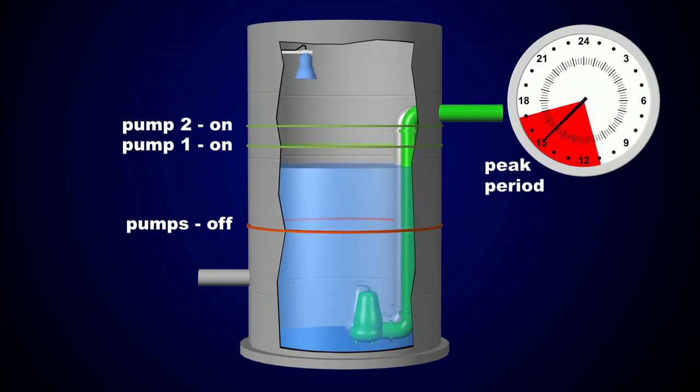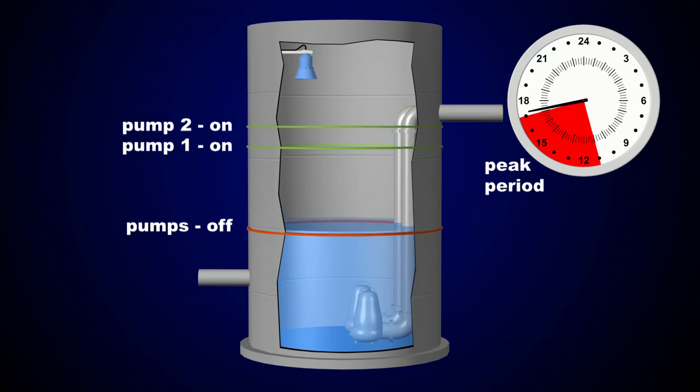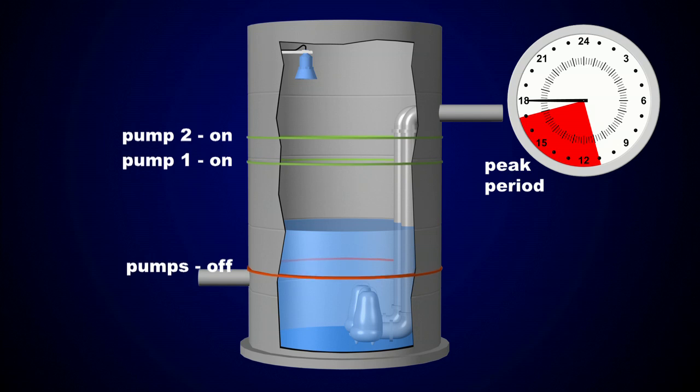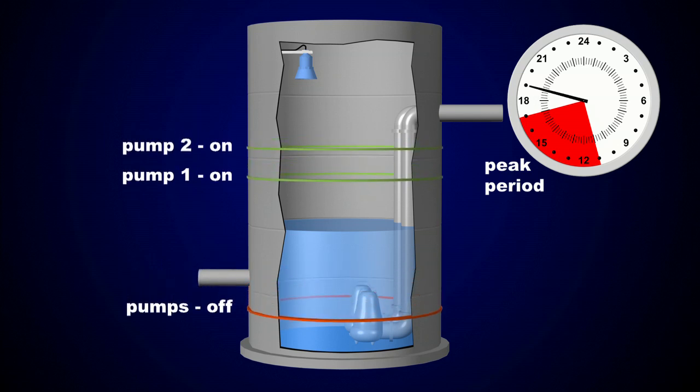During this peak tariff period, the pump run times will be shorter and less energy will be consumed. When the peak period ends, the pump set points return to the normal, off-peak settings.